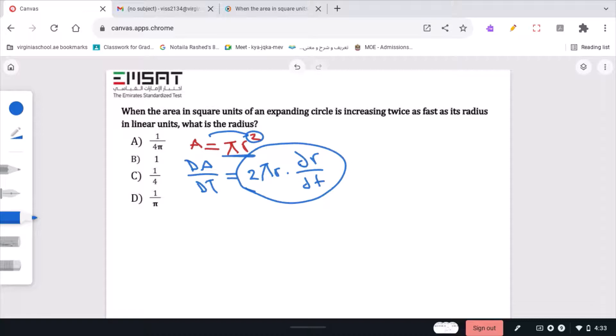In the question stem we're told that dA/dt is equivalent to 2 dr/dt. That's expressed when it says the expanding circle is increasing twice as fast as the radius. So this dA/dt indicates the expansion in the question.